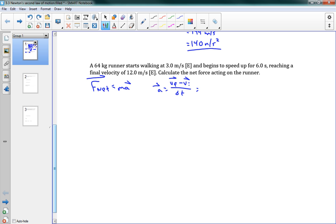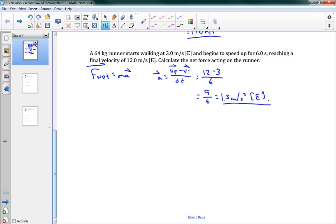We've got VF minus VI over delta T. And we can put in our numbers here. We have 12 minus 3 over 6 seconds. This gives us 9 over 6, or 1.5 meters per second squared east. There's our acceleration. Now we can find our net force. F net equals mass, we're told 64 kilograms, times 1.5 meters per second squared. We get 96 newtons east. There's our final answer.